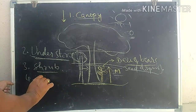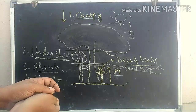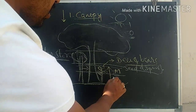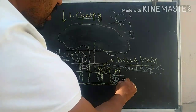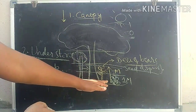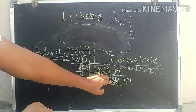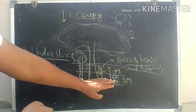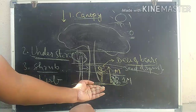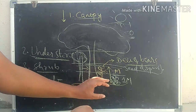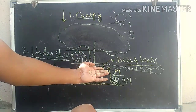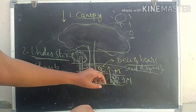The fourth layer is the herb layer. The plants which can grow up to one meter in length are called the herb layer. This is the second-to-last layer from the ground, below the shrub layer. The herb layer is very near to the forest floor.